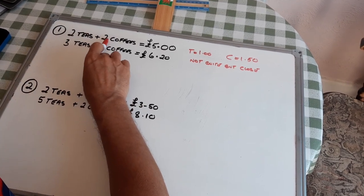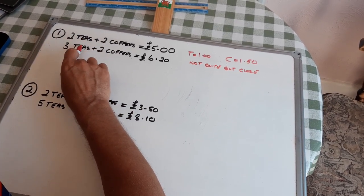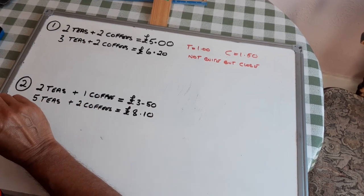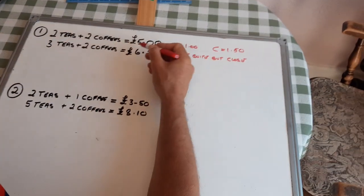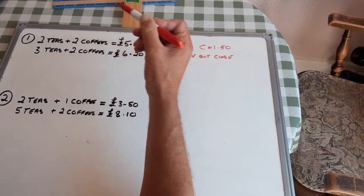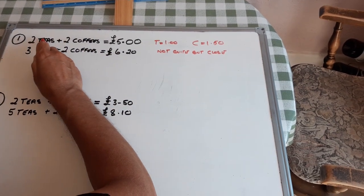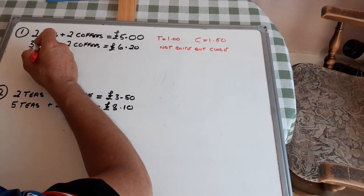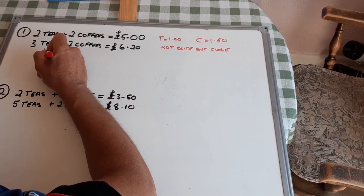I got the same number of coffees, but I've got one different amount of tea. And the price is £1.20 difference. So, three teas take away two teas is £1.20.